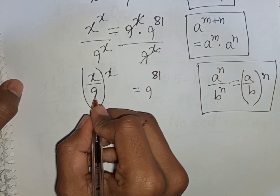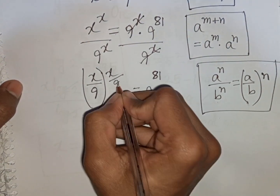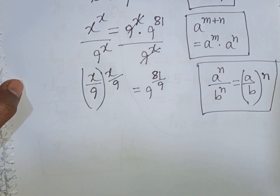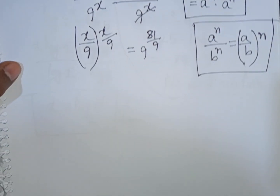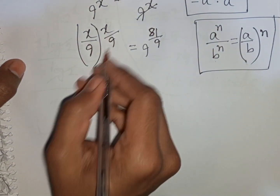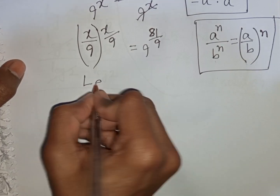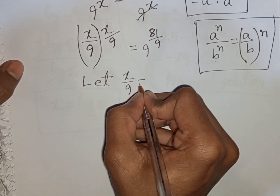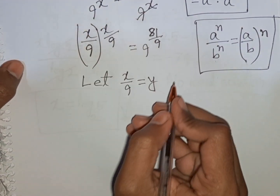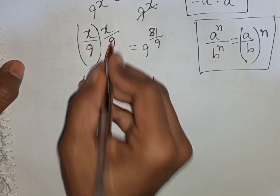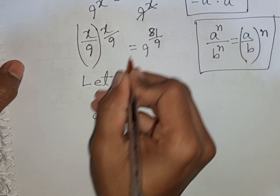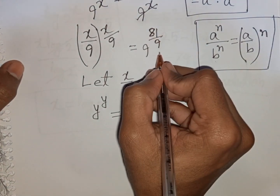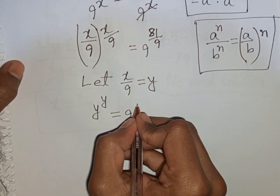Now we divide both sides by 9^9. We see x/9 appears on both sides as the same term. So let x/9 be substituted by y. Our equation will be y^y is equal to 9^81 divided by 9^9. That means it will be 9^9.